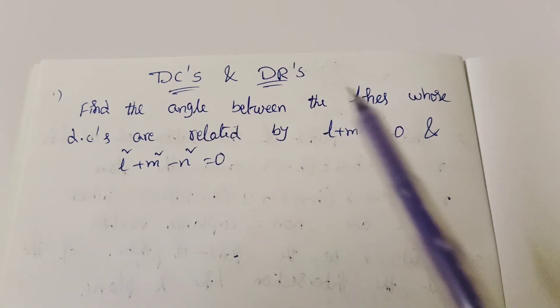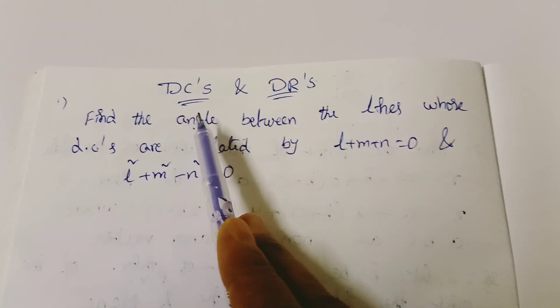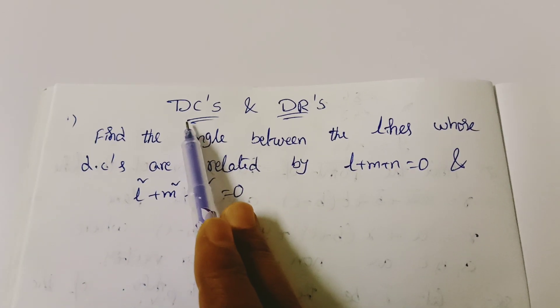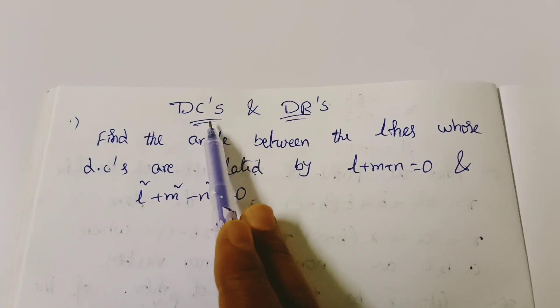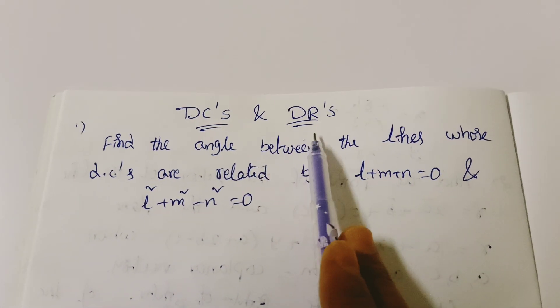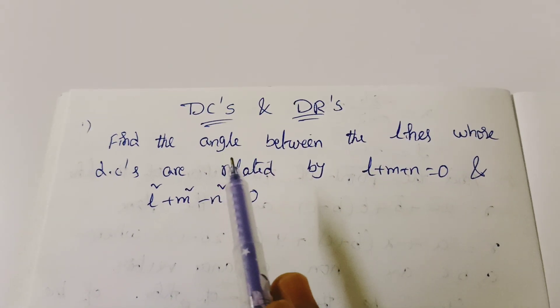What is the full form of DC? Direction Cosines. And DR stands for Direction Ratios.